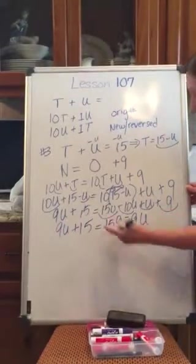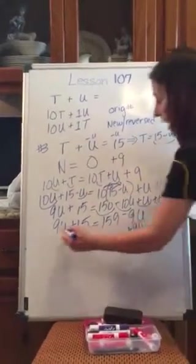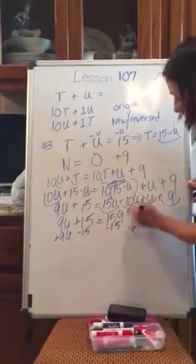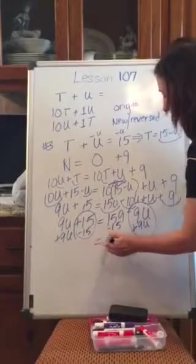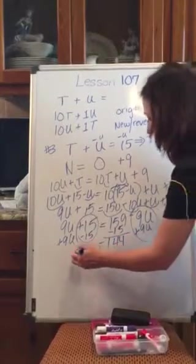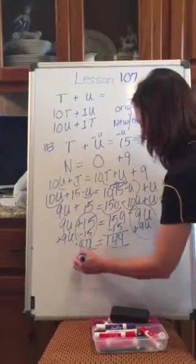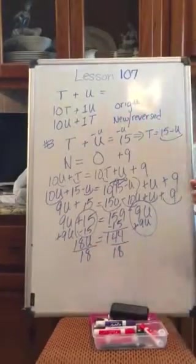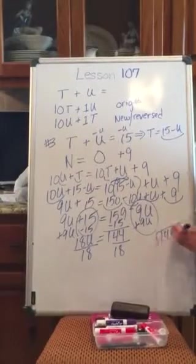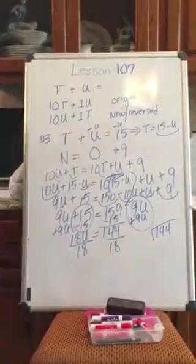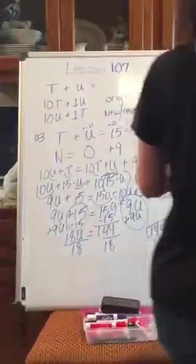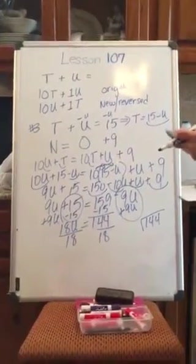All right, I'm going to move my U's to the left by adding 9U to both sides. And I'll subtract 15 on both sides. My U's cancel out here, 15's cancel out there, and I'm left with 144 equals 18U. Dividing 144 by 18, let me get my calculator just a minute. 144 divided by 18 is 8.